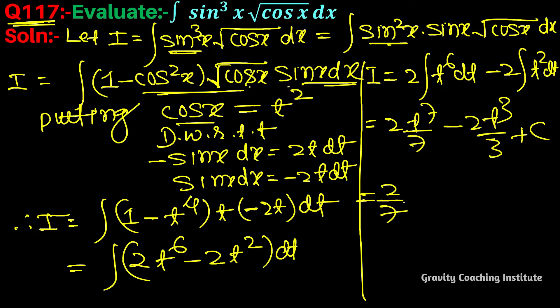Putting cos x back in terms of t, we get 2/7 cos^(7/2)x minus 2/3 cos^(3/2)x plus C, which is the required answer.